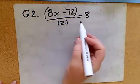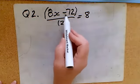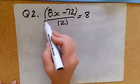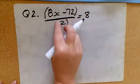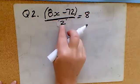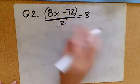So I'm going to do 8x take away 72, then divide everything by 2. So the last thing that happened on this side was that division by 2.